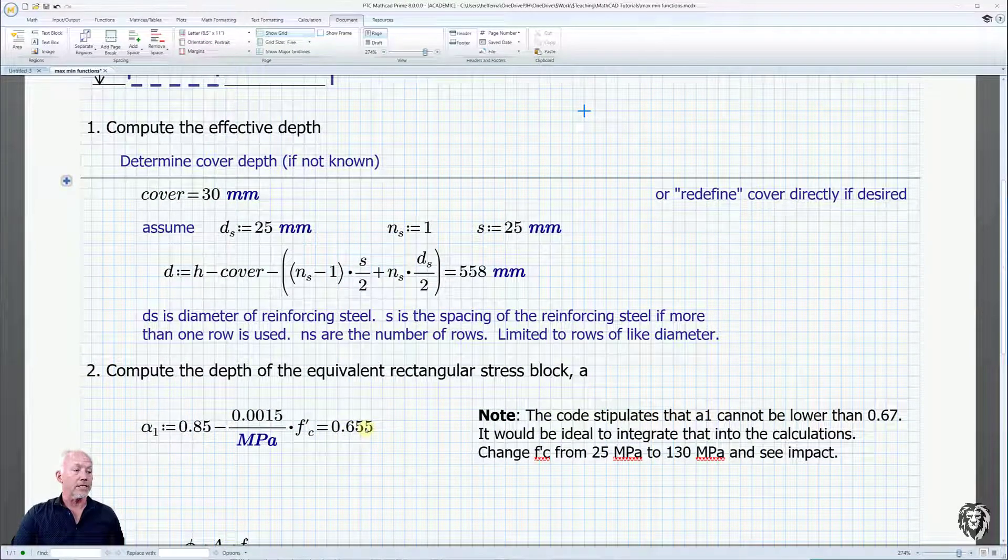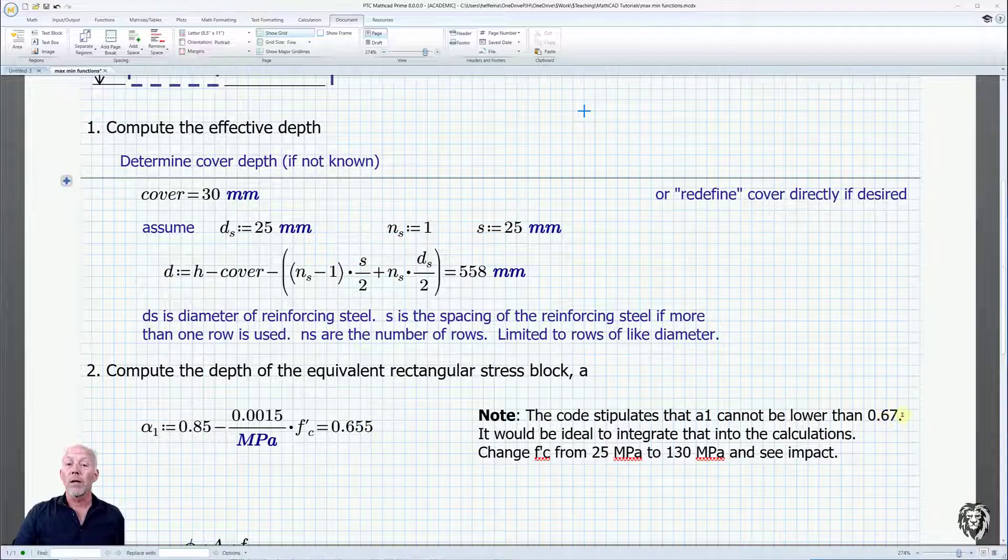we see it will calculate a value of 0.655, which is below the minimum that it's allowed to have. It has to be a minimum of 0.67 according to the code.